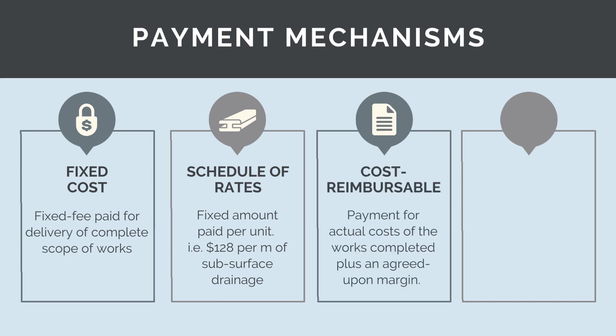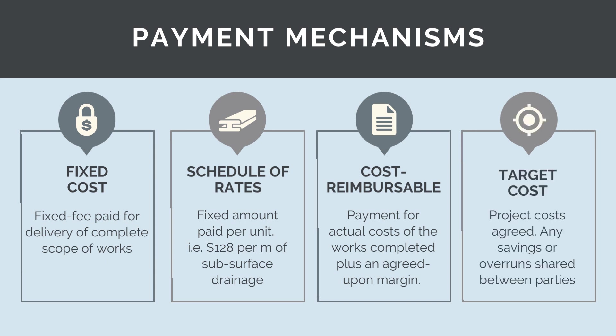Cost reimbursable is where the contractor is paid the actual cost of the work completed, plus an agreed-upon profit margin. The contractor will need to provide evidence of the actual costs incurred, and the agreed-upon margin will be written into the contract. Under a target cost mechanism, also known as a pain/gain-share model, typically used in alliance and relationship-based contracts, the project costs are agreed during the development stage and any over- or underspending of the budget is shared between the parties.